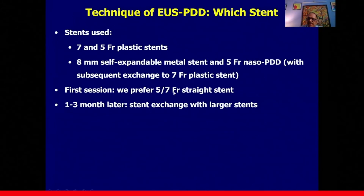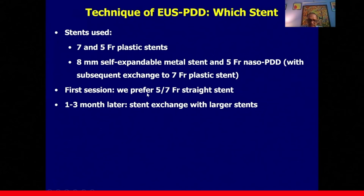There are no dedicated stents for pancreatic duct drainage, so we use commercially available 7-French and 5-French plastic stents. There have been reports of using 8 mm self-expandable metallic stents, and 5-French nasal pancreatic drainage catheters subsequently exchanged for 7-French plastic stents. In our practice, at the first session we are not aggressive — we use 5 or 7-French straight stents after dilation with a 6-French cystotome, and one to three months later, once the tract matures, we exchange the stent, dilate the tract, and use larger-caliber stents.